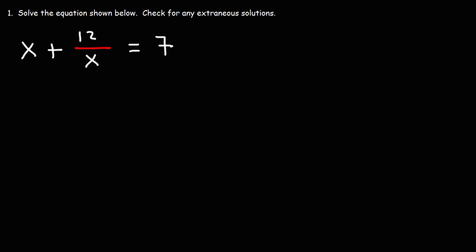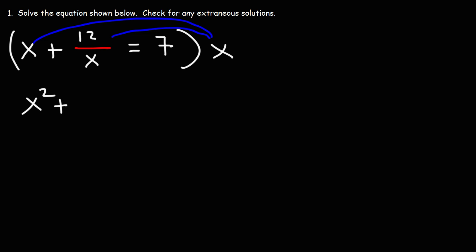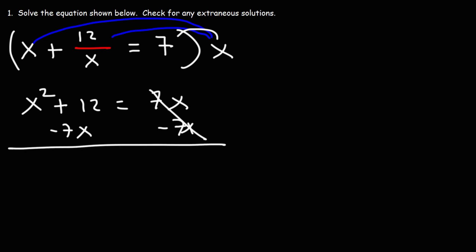So how can we solve this rational equation? One of the first things I recommend doing is getting rid of the denominator in the fraction, which means multiplying everything by x. So we have x times x, which is x squared. Next, x times 12 over x — the x variables cancel and we just get 12. And then x times 7 is 7x. Now let's subtract both sides by 7x, so we have x squared minus 7x plus 12 equals 0.